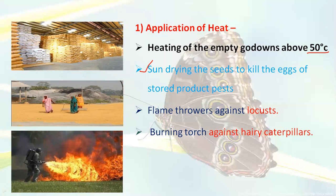Women laborers spread the grains under sunlight. Insects that attack the grains are controlled due to the temperature from the sun. Hibernating stages and immature stages like eggs or larvae present in stored products are properly controlled by sun drying practices. This is the second practice involved in the physical method.